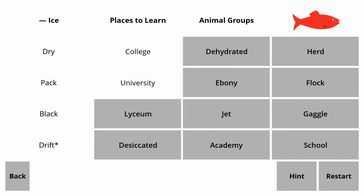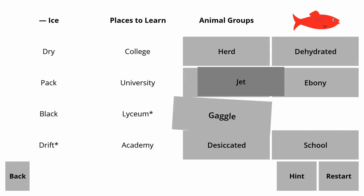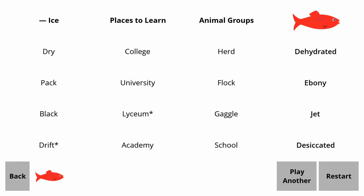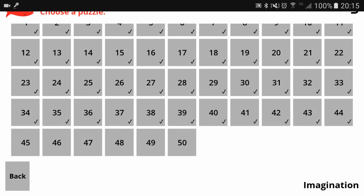Places to learn: an academy. Animal groups: Herd, Flock, Gaggle, and School — those were all over. Red herrings are Dehydrated, Ebony, Jet, and Desiccated. And that's everything for this episode — see ya! Share, share.